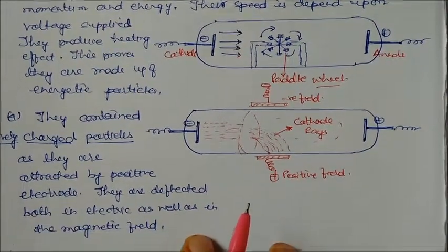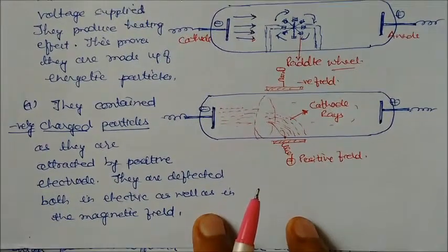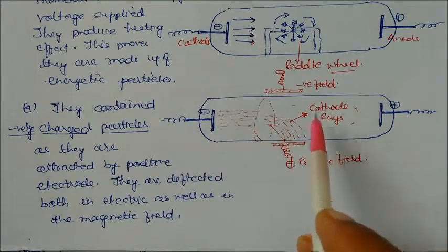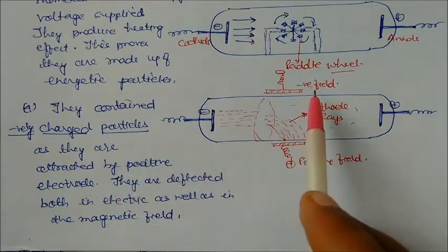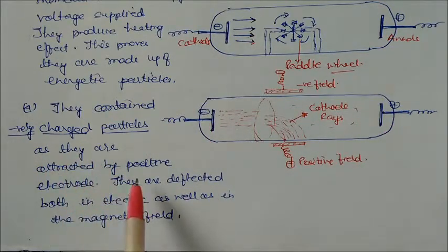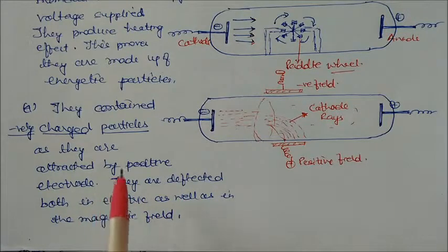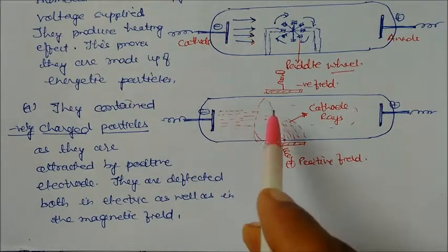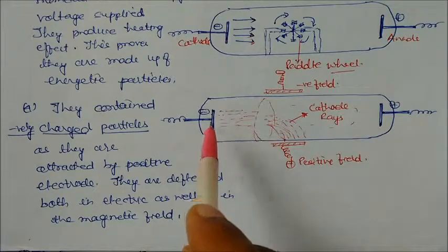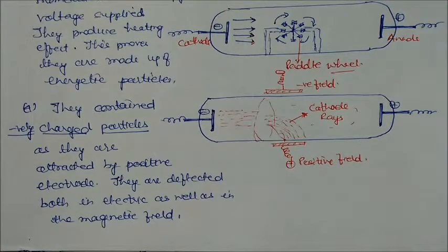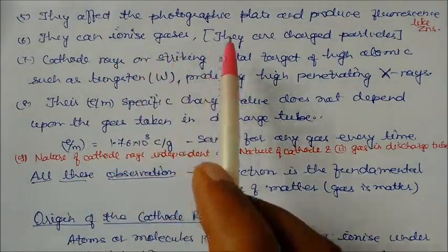Next, cathode rays contain negatively charged particles. In the discharge tube, there is a negative field and a positive field — anode and cathode. The rays are attracted by the positive field and are deflected by both electric as well as magnetic fields. When passing through the field, they are attracted towards the positive side — this confirms that cathode rays are negatively charged particles.